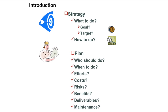When it comes to a plan: who should do it, when to do it, what effort is required, what would be the cost, what could be the risk, what are the benefits, what could be the deliverables, how maintainable it is — this is the complete plan. Strategy and plan are two different things but they are interrelated. On a higher level, when you think about something it is a strategy; when you drill down all the basic details, that is the plan.